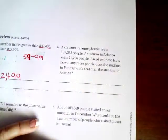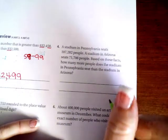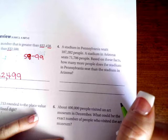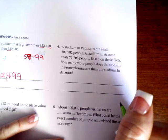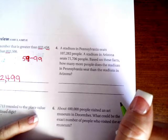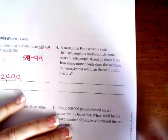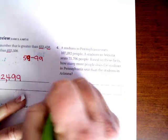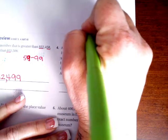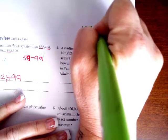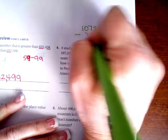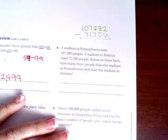A stadium in Pennsylvania seats 107,282 people. A stadium in Arizona seats 71,706 people. Based on these facts, how many more people? How many more, we're finding the difference. That means subtraction. So we're going to do 107,282 and I'm going to subtract the 71,706.